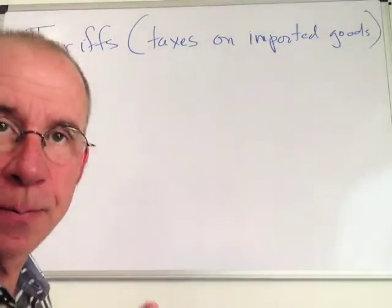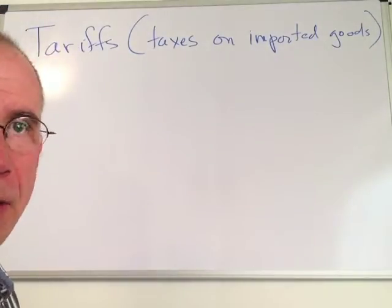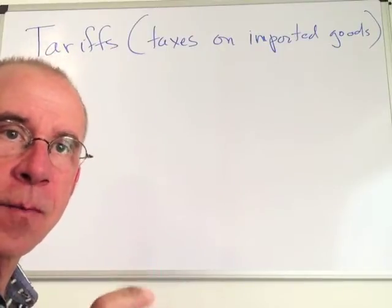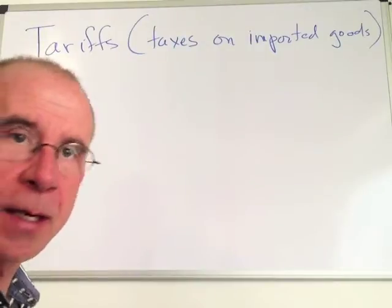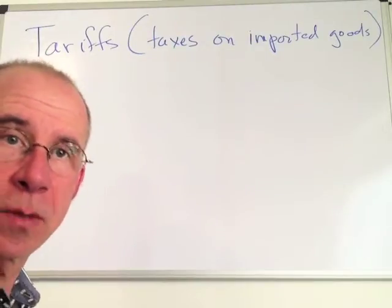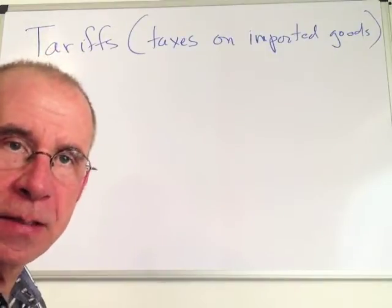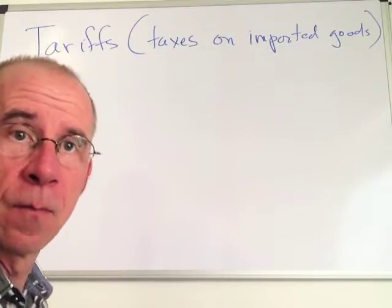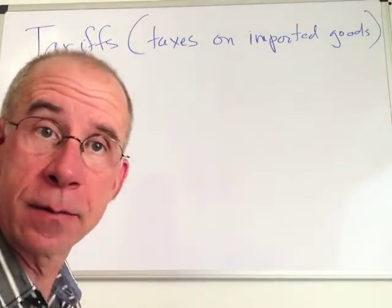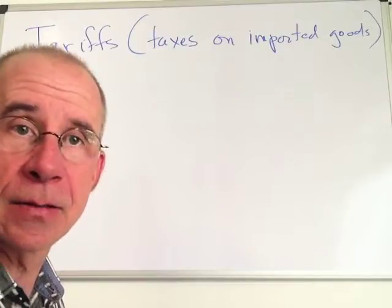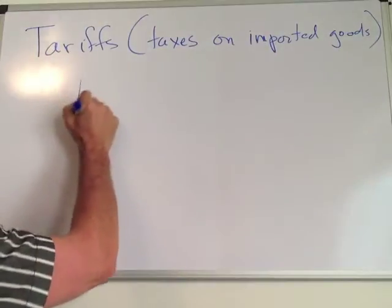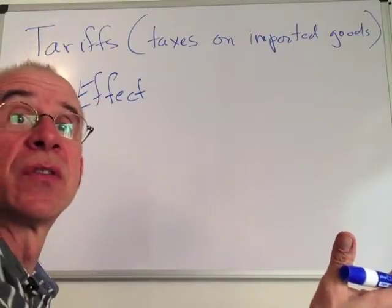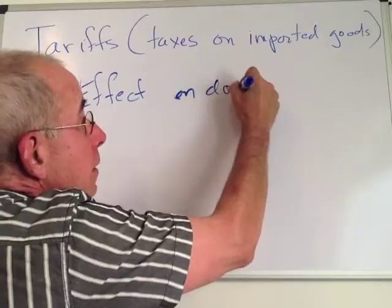Let's take a look at one of the basic trade policy instruments used around the world: tariffs. These are taxes on imports — the government forces an importer bringing a product into the country to pay a tax in order to sell it within the domestic economy. This is a discriminatory tax, imposed only on products that come in from abroad; the same product produced domestically has no such tax. One of the most important things to understand is the effect of the tax on imports on domestic prices.